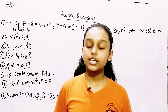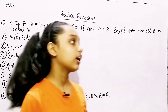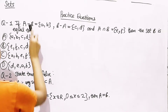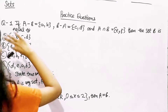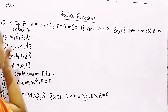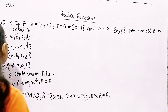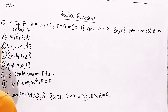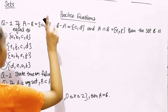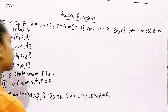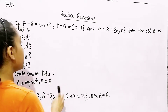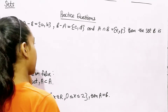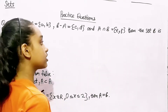Let's get started. The first question we have is about the difference of two sets A and B. If A minus B is equal to the elements {a, b}, and B minus A is equal to the elements {c, d}, and A intersection B is equal to the elements {e, f}...